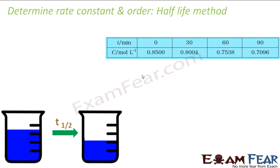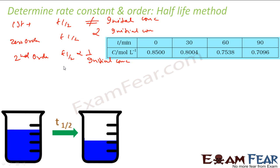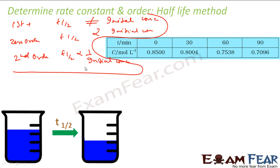The last method is the half-life method, also used to calculate the rate constant and order. For the first-order equation, half-life is independent of initial concentration. For the zero-order equation, half-life is directly proportional to initial concentration. And for the second-order equation, half-life is inversely proportional to initial concentration.